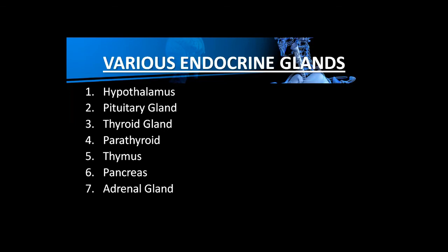Now let us discuss the various endocrine glands present in our body. There are very important glands which make up our endocrine system. First is the hypothalamus — it is not in your book, but I want to share its location. The hypothalamus is found on the underside of the brain.